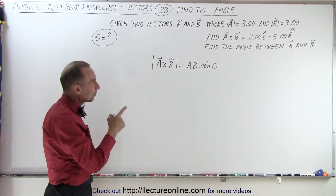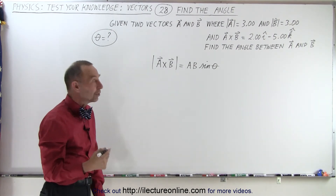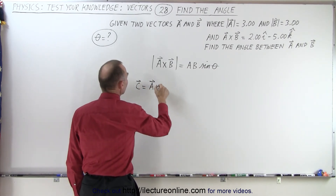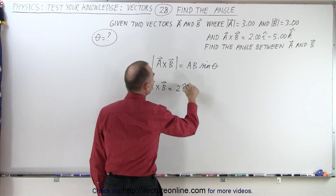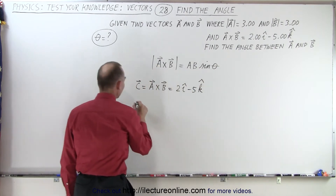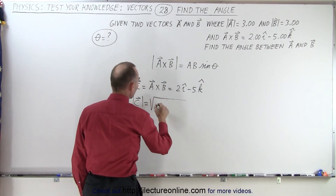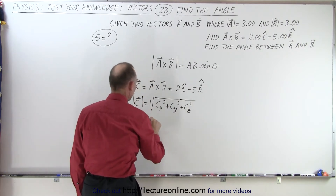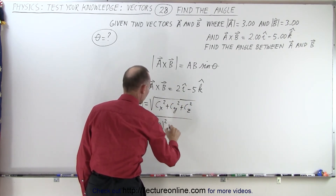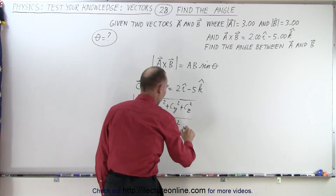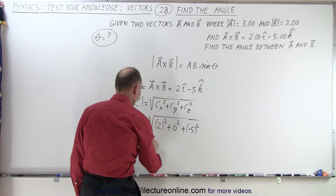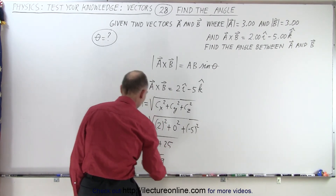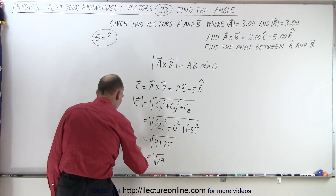Since we're given the resultant vector of a cross b, let's find the magnitude of that. We say vector c is equal to the cross product of a and b, which equals 2i minus 5k. The magnitude of c by definition is the square root of the x component squared plus the y component squared plus the z component squared. So that's the square root of 2 squared plus 0 squared — since there's no y component — plus negative 5 squared, which equals the square root of 4 plus 25, giving us the square root of 29.